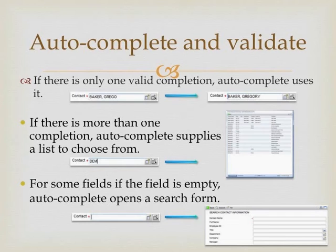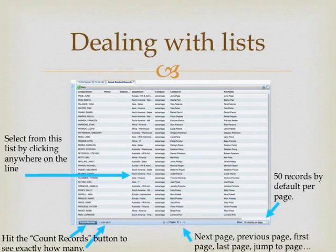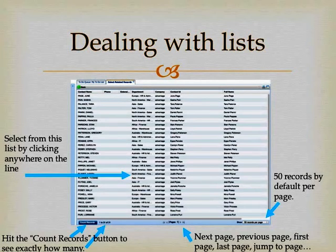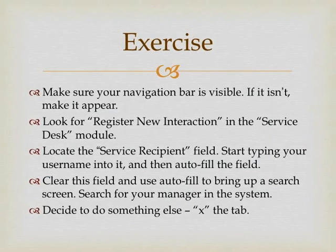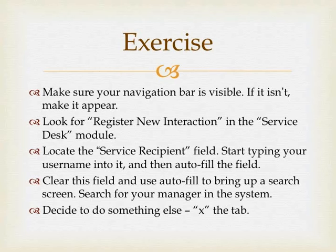If you leave the field blank, you'll be presented with a search screen. If presented with a list, it may not show all records — by default it will only show the first 50. You'll see a pull-down menu at the bottom right of the screen to show more, and Fast Forward, Rewind, Next Page, and Previous Page controls in the middle. You can hit the Count Records button to see exactly how many records there are. Make sure your navigation bar is visible. Look in the Service Desk field for Register New Interaction. Locate the Service Recipient field, start typing your username, and auto-fill the field — it should complete your username. Then clear the field and use auto-fill to bring up a search screen, and search for your manager in the system.